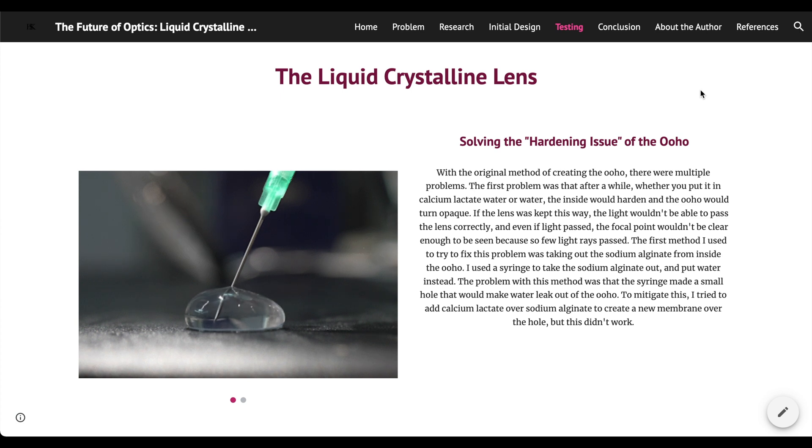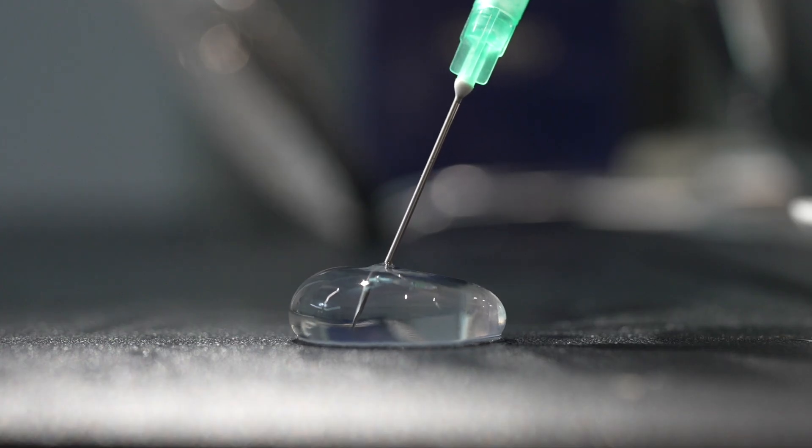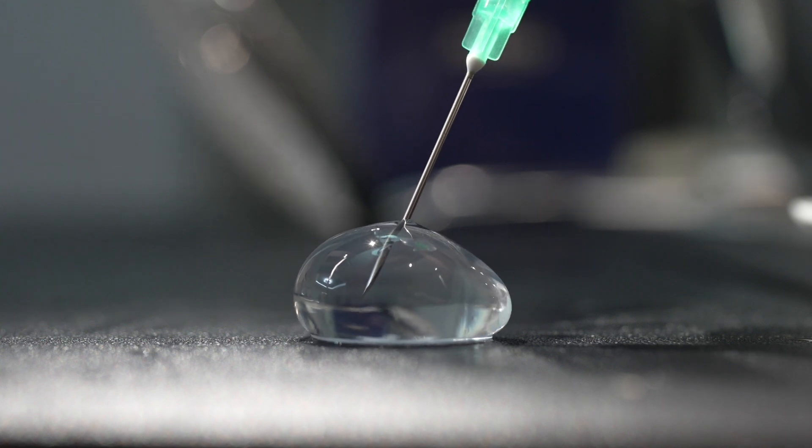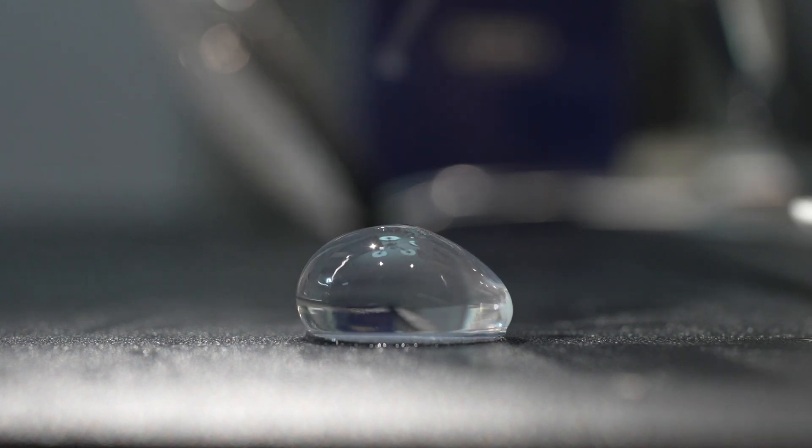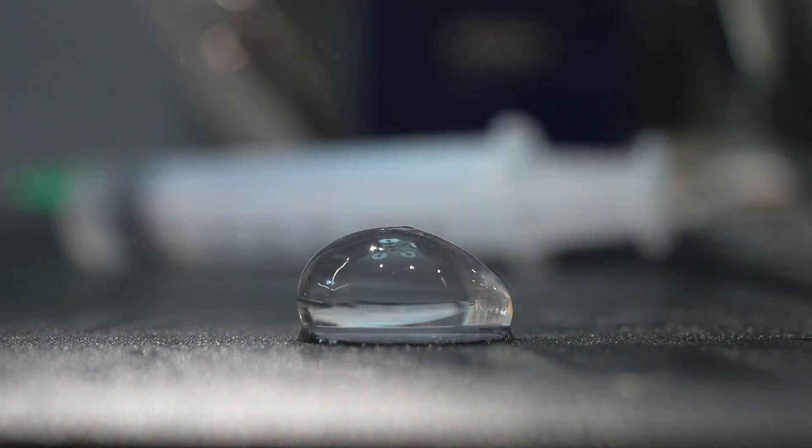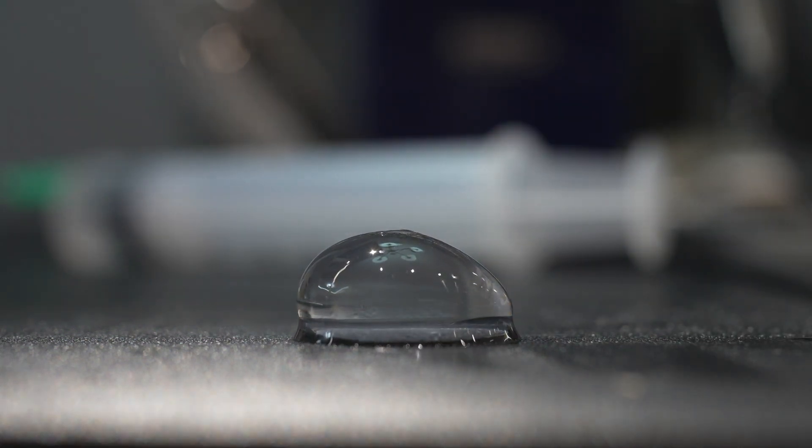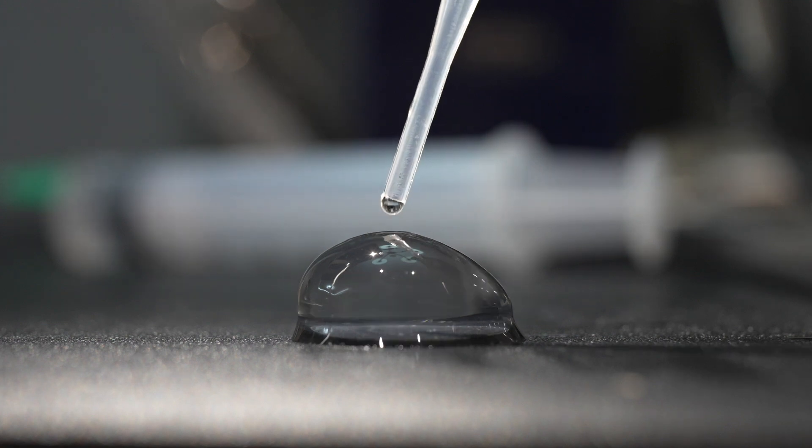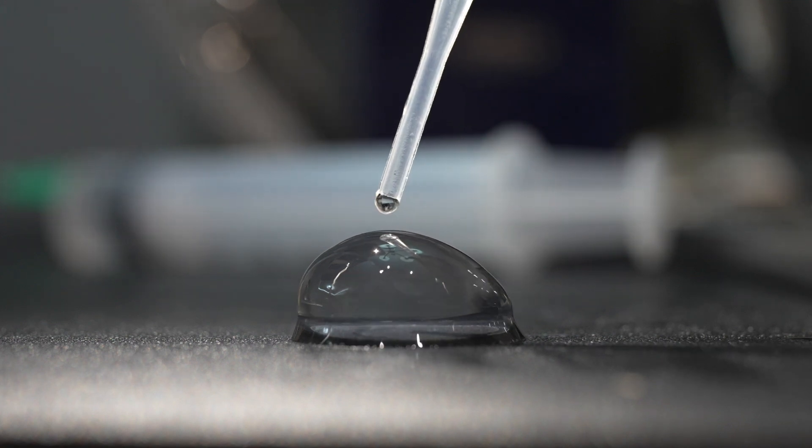The first method I used to try to fix this problem was taking out the sodium alginate from inside the OHO. I used a syringe to take the sodium alginate out and put water instead. The problem with this method was that the syringe made a small hole that would make the water leak out of the OHO. To mitigate this, I tried to add calcium lactate over sodium alginate to create a new membrane over the hole, but this didn't work.